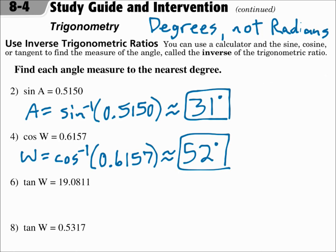Number 6: tangent of W equals 19.0811. To solve for W, do the opposite of tangent, which is arc tangent. Hit the second and then the tangent button. Arc tangent of 19.0811 gives you approximately 87 degrees.